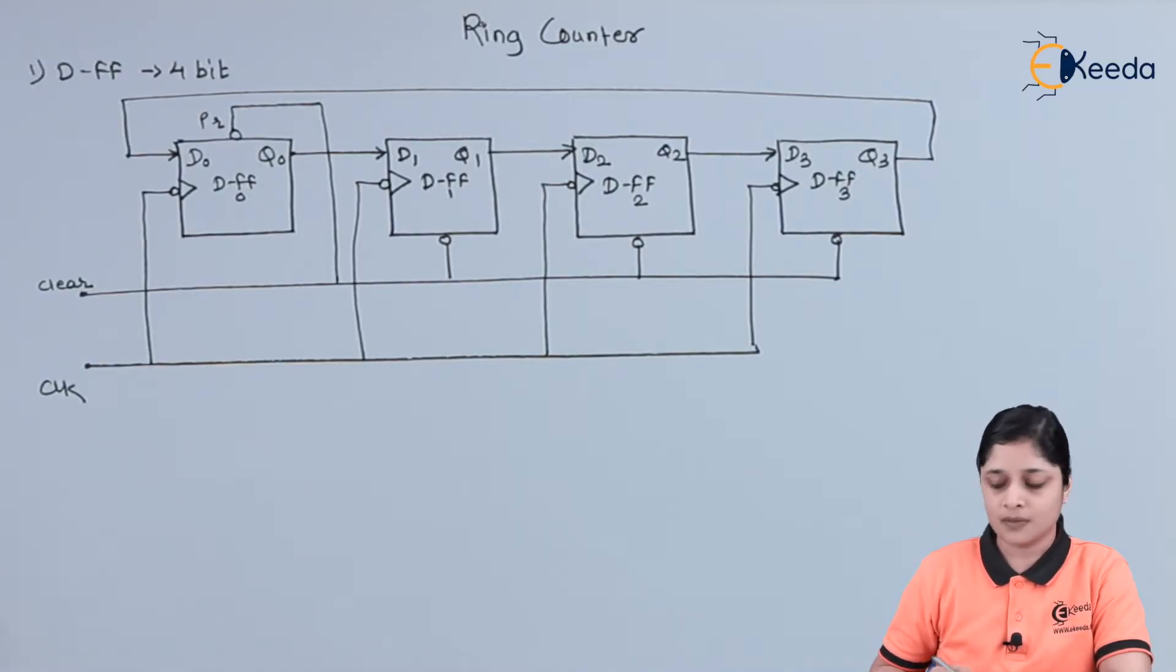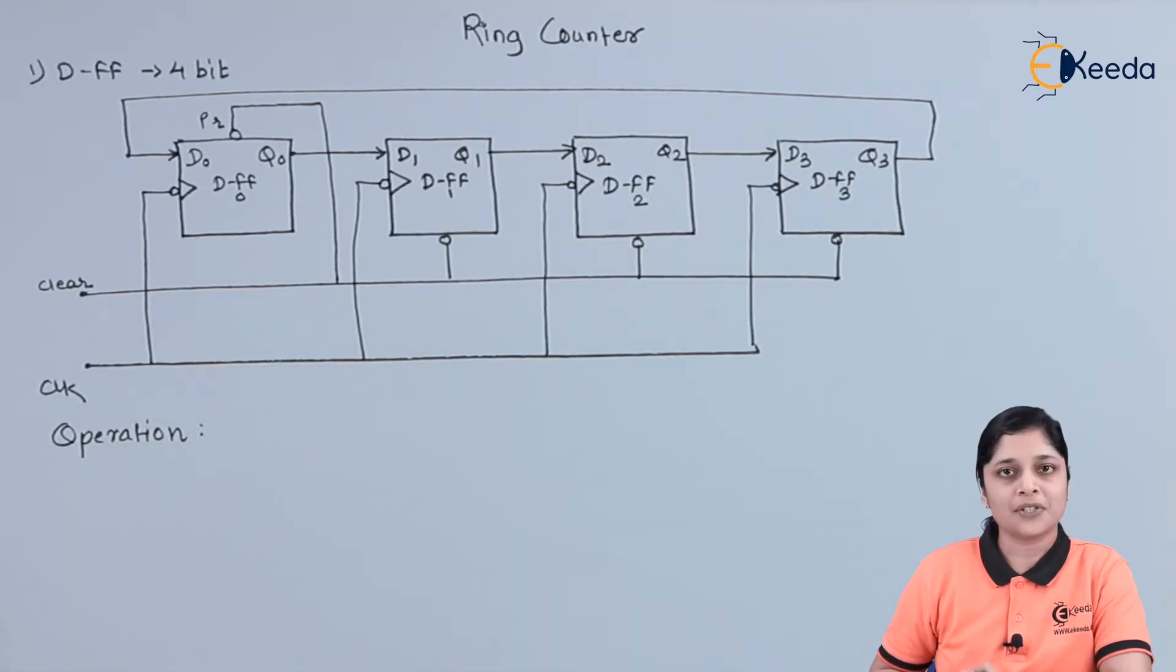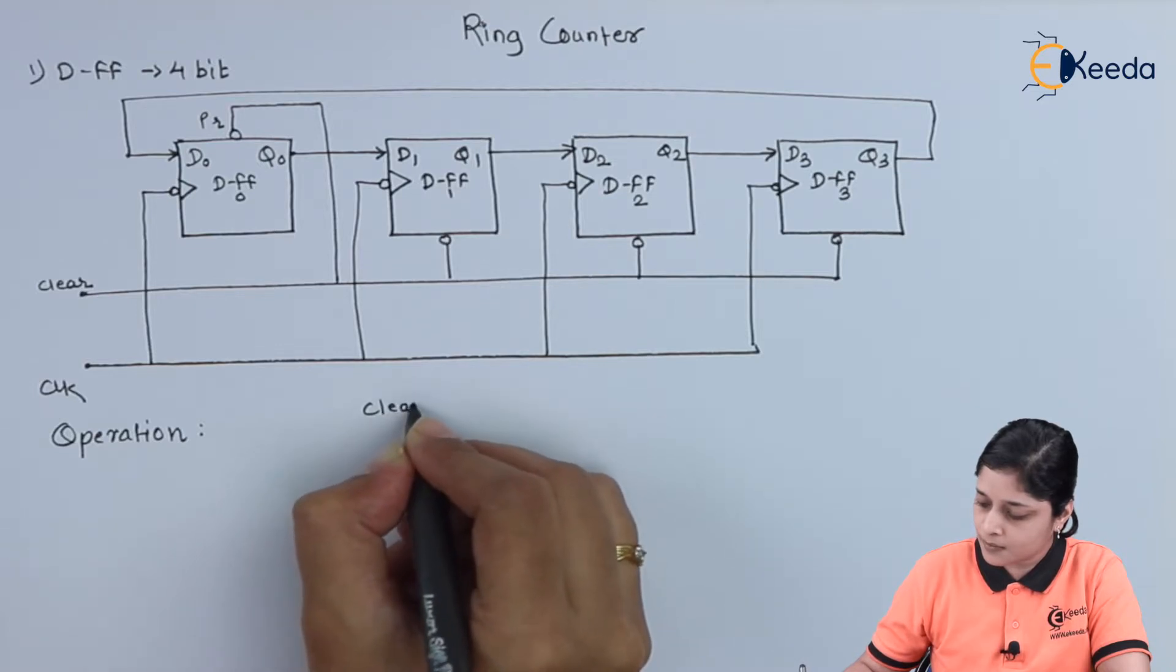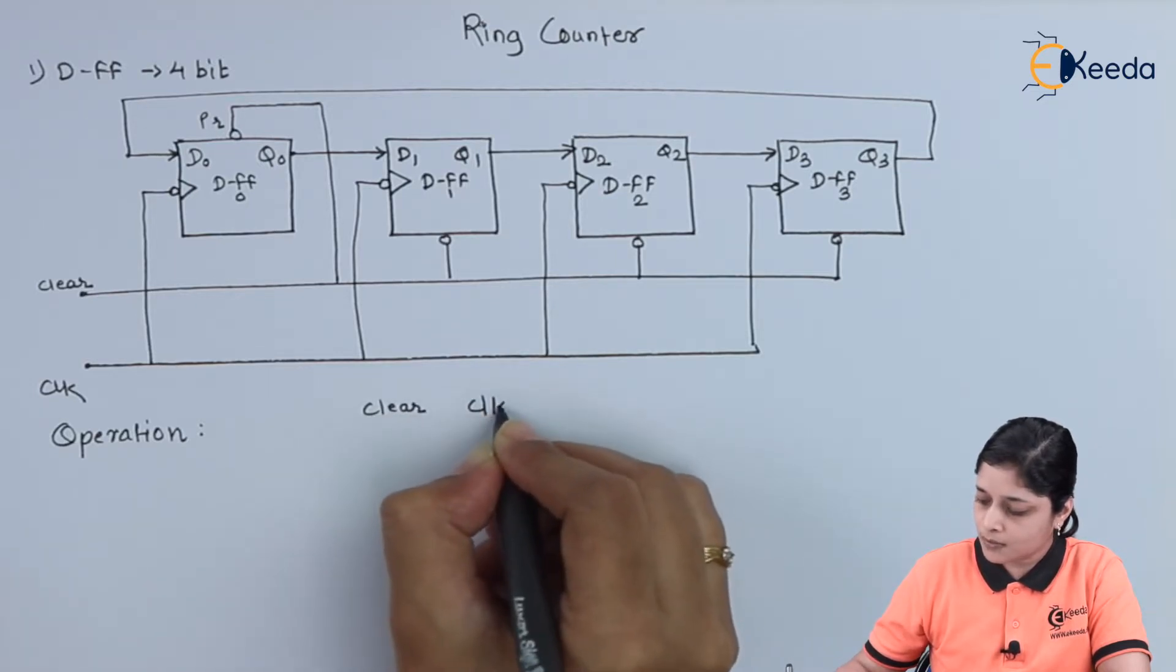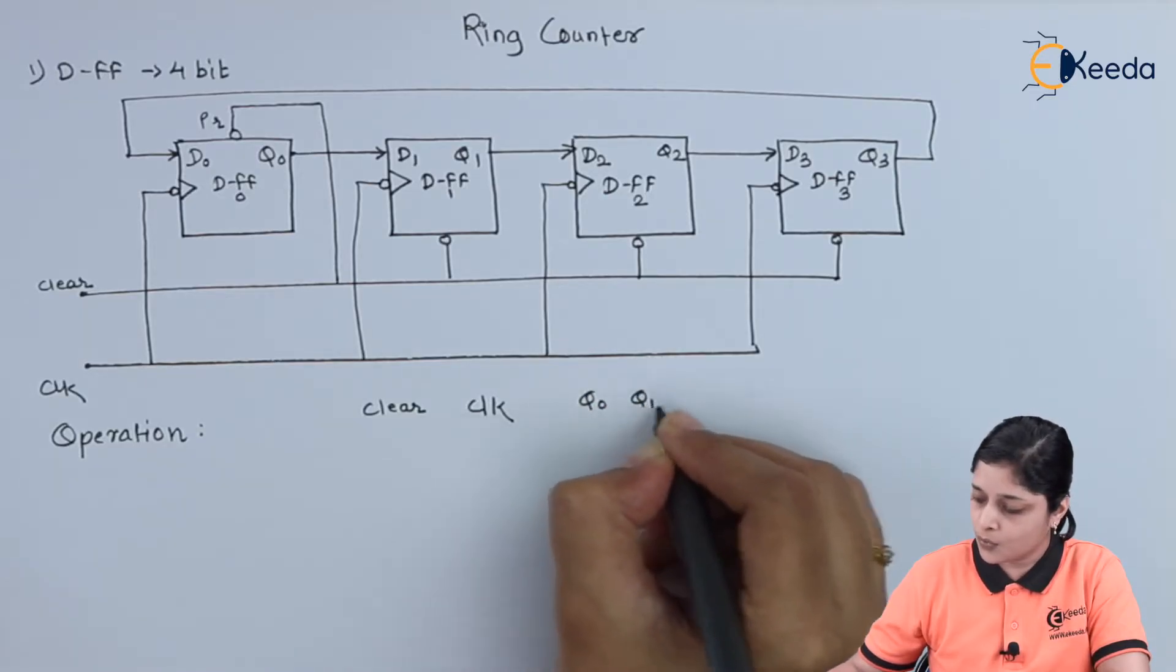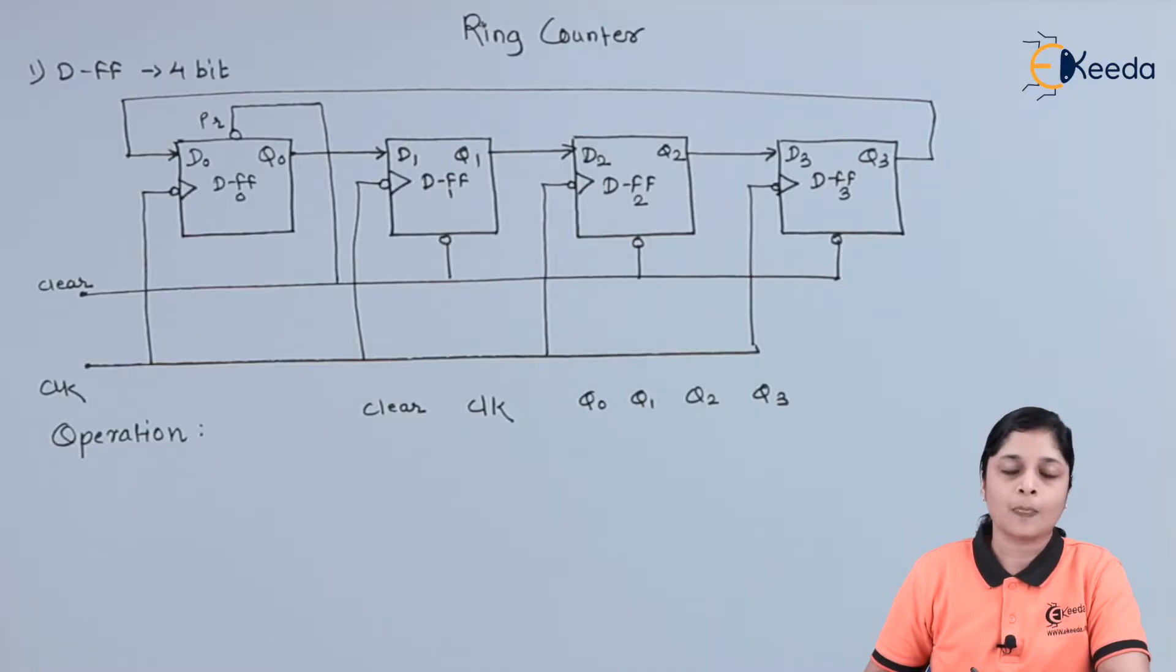We will see its operation. For the operation purpose, we have to use clear terminal, then clock and the outputs. That is Q0, Q1, Q2 and Q3. We will start the operation of ring counter.